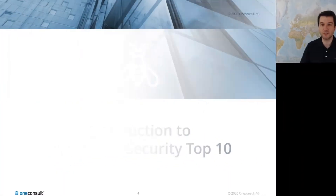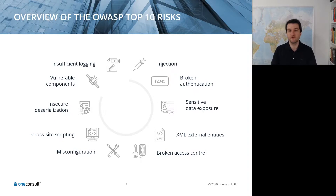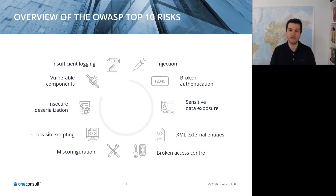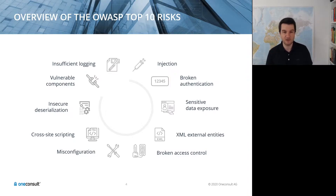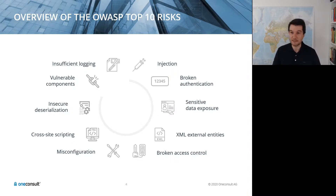OWASP stands for Open Web Application Security Project, founded in 2001. This non-profit organization aims at improving security on the web. The most well-known publication is the OWASP top 10 list, containing the 10 most critical or widespread issues found in web applications. If terms like insecure deserialization or XML external entities don't ring a bell, I highly encourage you to look into the original web top 10, since these issues might also arise in an API environment.